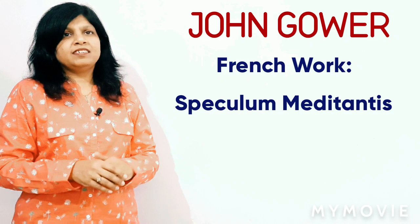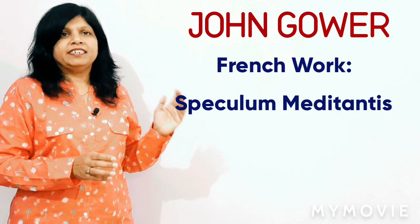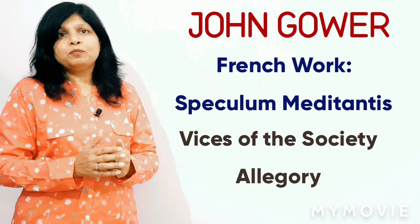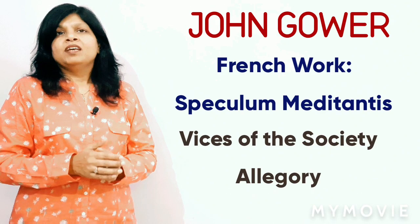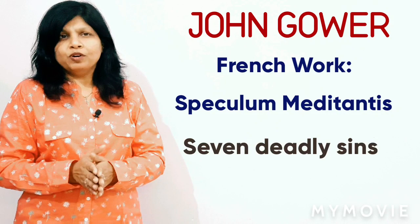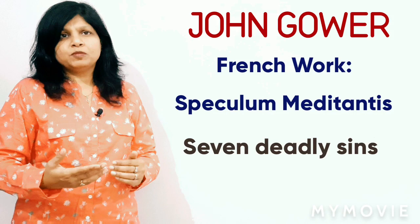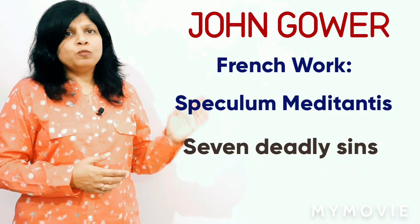The first important work, written in French, is Speculum Meditantis. It is a very long poem written in 30,000 lines. This poem represents the vices of contemporary society and is again an allegory — a sermon against immorality. In this work, there are seven deadly sins, and these seven deadly sins along with their offspring attack mankind. It is composed in 12-line stanzas and opens impressively with a description of the devil's marriage to the seven daughters of sin.